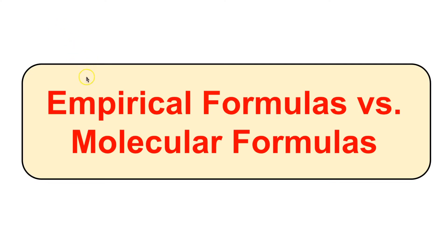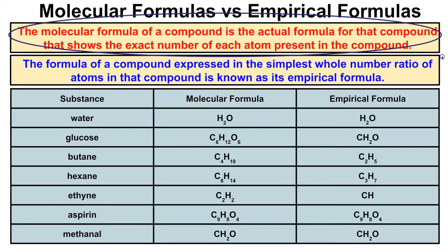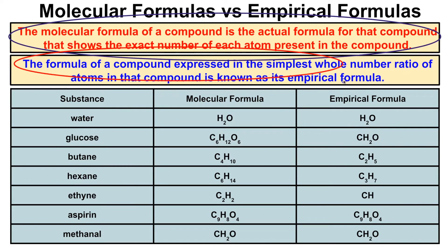Hey, this is Mr. Millings, and in this video we are going to learn about empirical formulas versus molecular formulas. The molecular formula of a compound is the actual formula for that compound, showing the exact number of each atom present. The empirical formula is the formula of a compound expressed in the simplest whole number ratio of atoms in that compound.